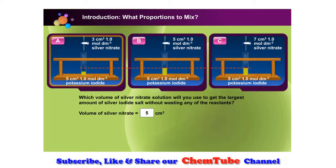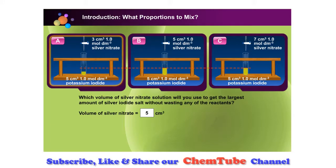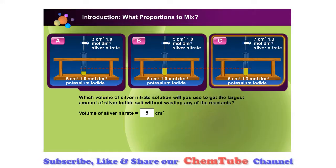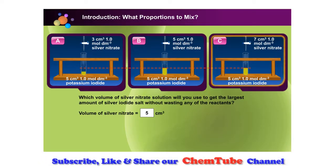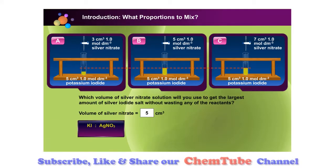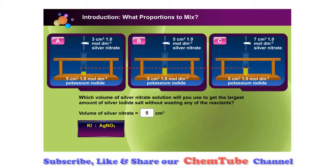An insufficient volume of silver nitrate, as in A, will not produce the maximum yield. An excessive volume of 7 cubic centimeters of silver nitrate is wasteful. From this method, we determine the ratio of the two reactants, which is 1 to 1.